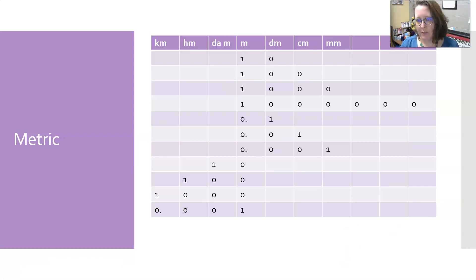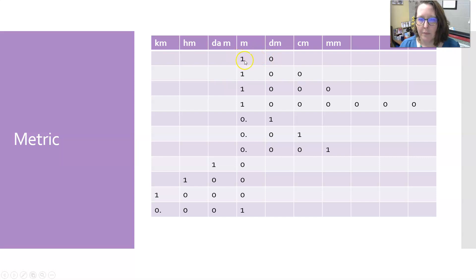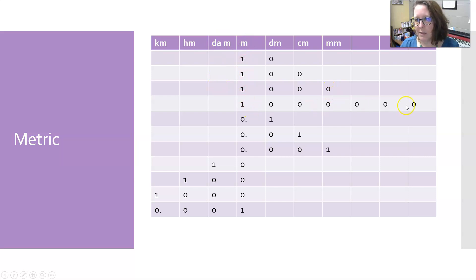So how do you convert back and forth between these? It's really easy — this is how I learned it in grade school. I was raised in Europe, so I grew up with metric. For example, one meter is 10 decimeters. One meter is 100 centimeters. One meter is 1,000 millimeters.